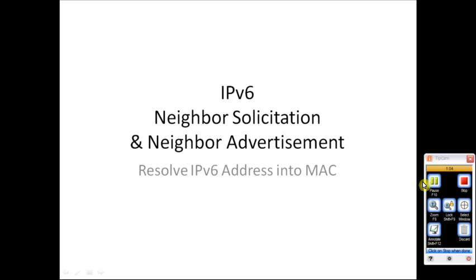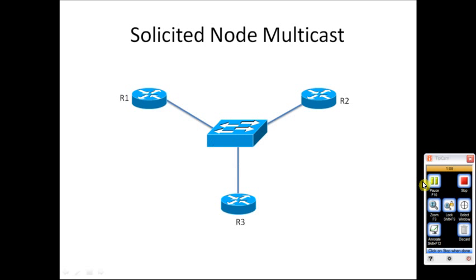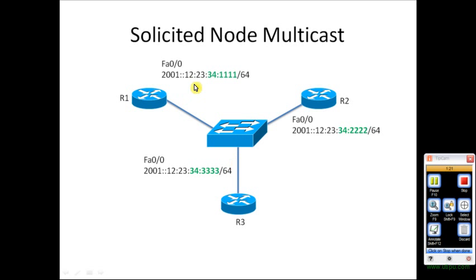Now what happens with IPv6? Things are a little bit different. In this scenario we have three routers — R1, R2, and R3 — all connected to the same network switch. Each router is assigned an IPv6 address through its FastEthernet 0/0 interface.